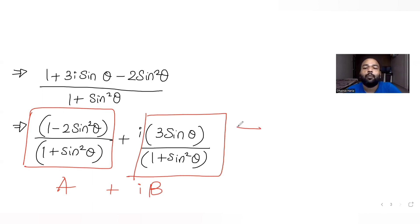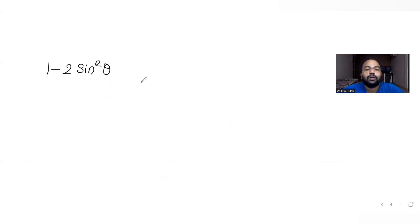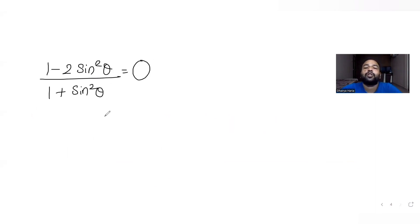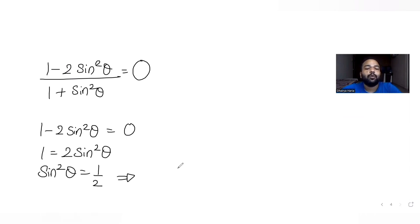Since the entire complex number is purely imaginary, only the imaginary part exists — the real part must equal zero. Setting the real part equal to zero: (1 − 2sin²θ) = 0, which gives 2sin²θ = 1, so sin²θ = 1/2. Taking the square root on both sides gives sinθ = ±1/√2.